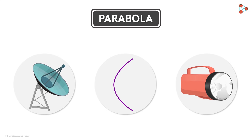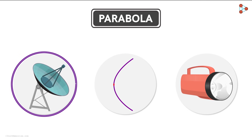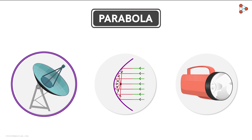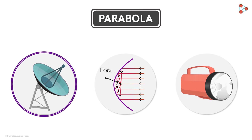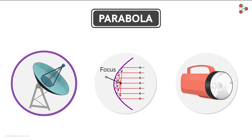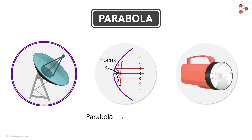In the case of the dish satellite, due to the parabolic shape, all the incoming signals falling on the dish are reflected towards a single point — this is where the receiver is placed. So the parabolic shape helps in concentrating all the incoming signals at a single point. Such a point for a parabola is called its focus, and every parabola has a focus point. This is what makes a parabola so useful.